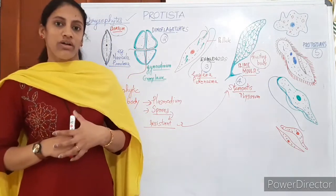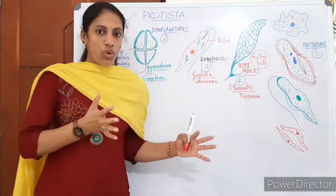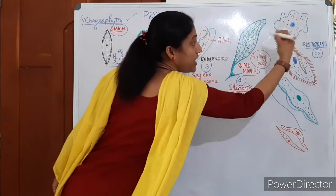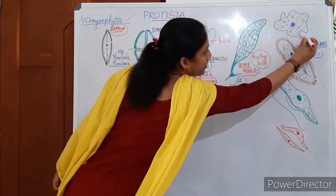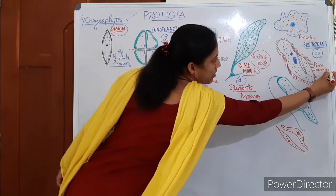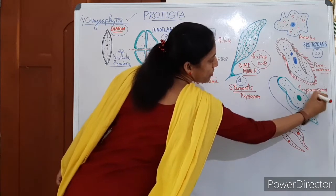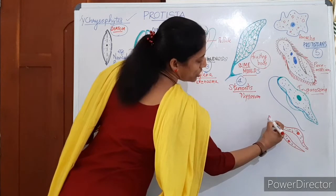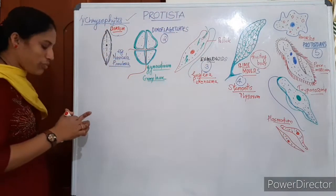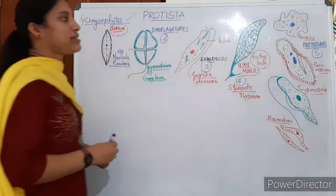The last group is Protozoans, considered primitive animals. Some members were earlier placed in Kingdom Animalia. Common members include Amoeba, Paramecium, Trypanosoma, and Plasmodium — which causes malaria. Protozoans are classified into four types based on their locomotory organs.